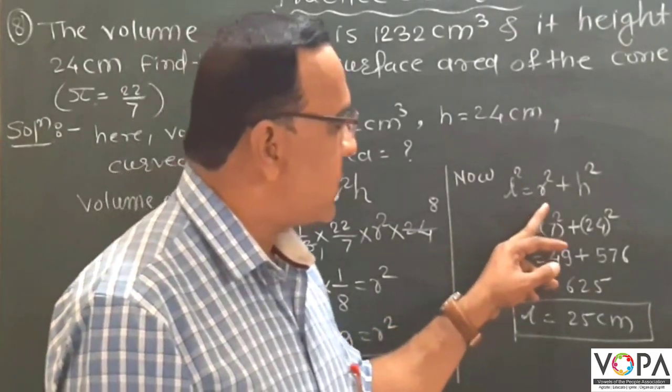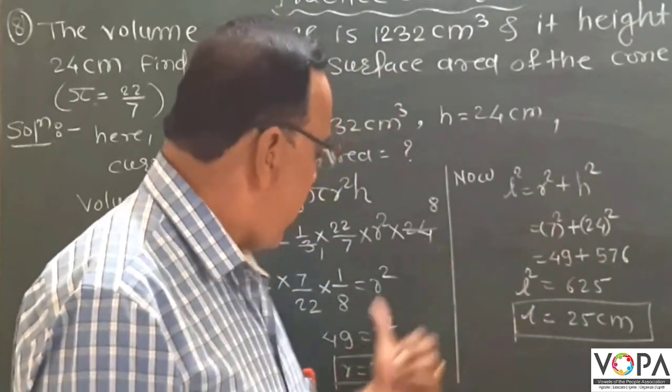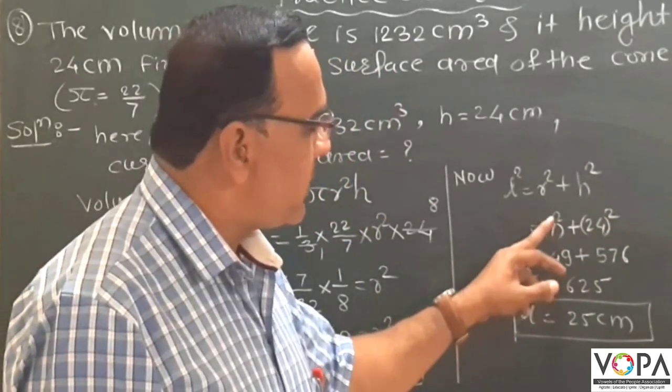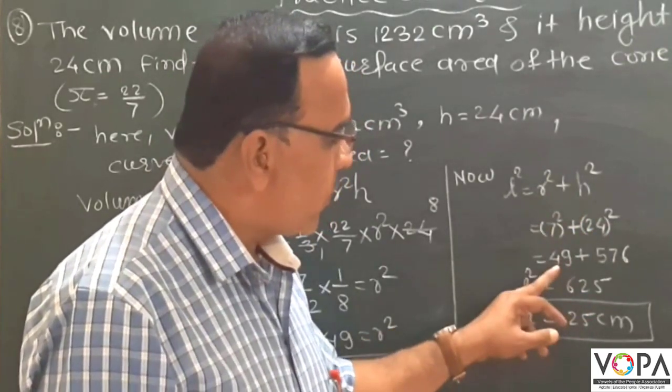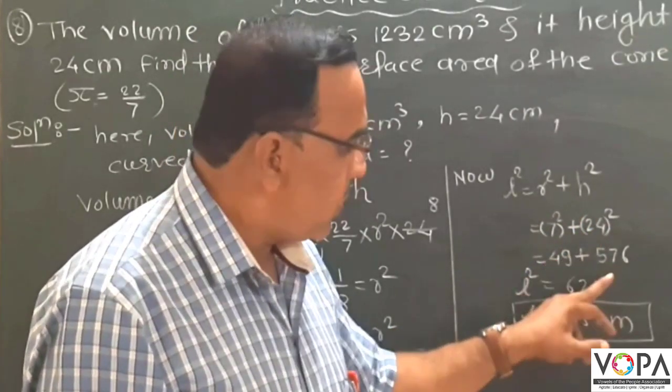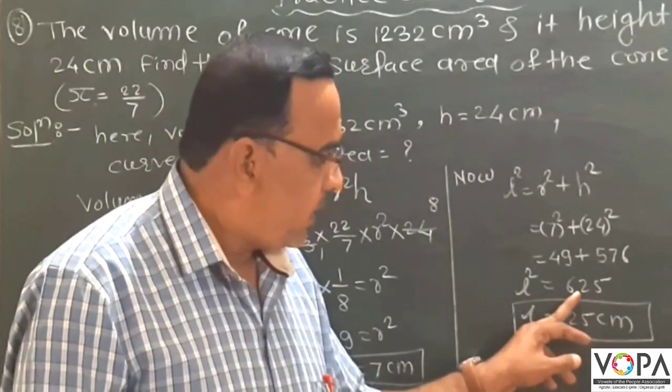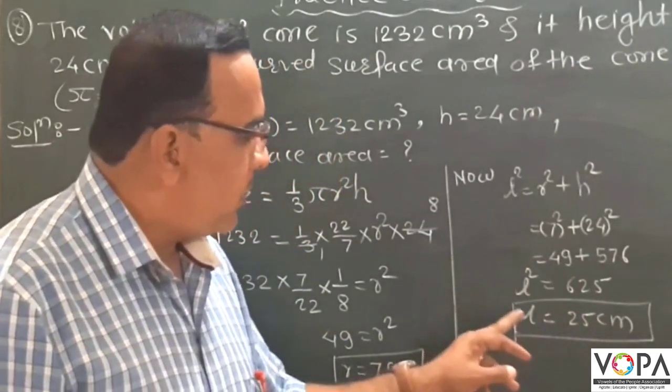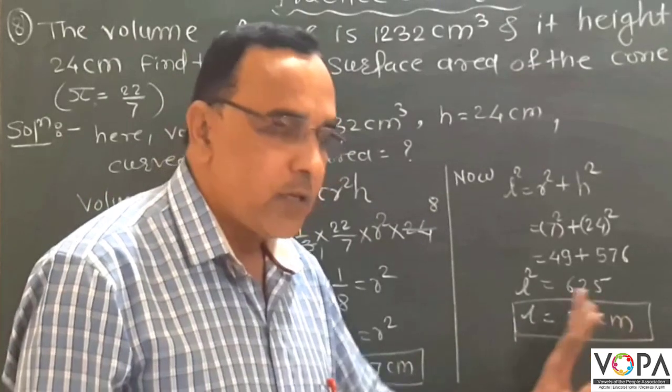l² is equal to r² plus h². Now r value is 7 cm. This is 7² plus h is 24². 7² is 49, 24² is 576. l² is equal to 625 by addition. Then square root of 625 is 25. l is equal to 25 cm.